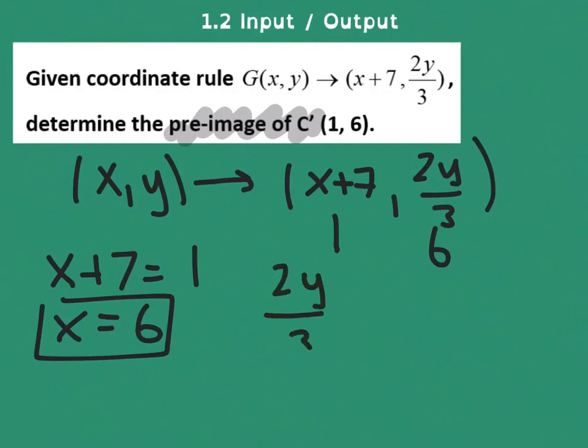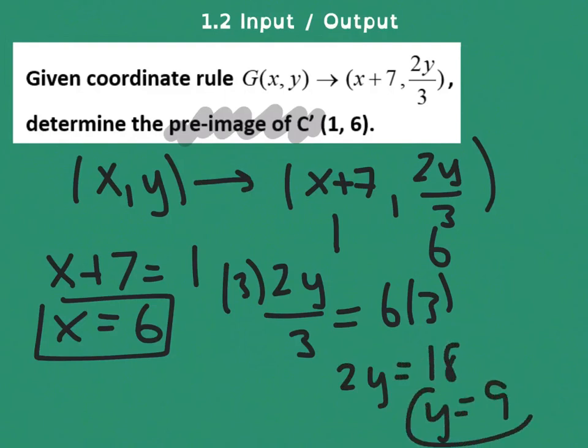Now the other one is a little trickier. Two thirds of y equals 6. I'm going to multiply both sides by 3. And I get 2y equals 18. And then y equals 9. There I have it. I have been able to calculate the values for the x as well as for the y going from the output to obtain the input. Hope this helps.